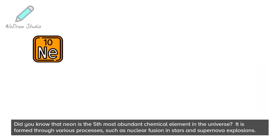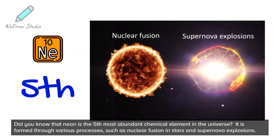Did you know that neon is the fifth most abundant chemical element in the universe? It is formed through various processes, such as nuclear fusion in stars and supernova explosions.